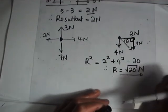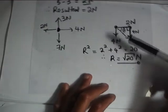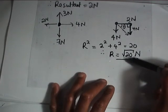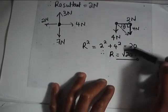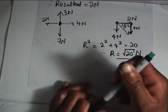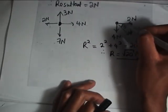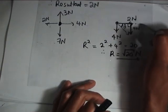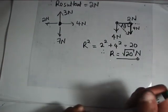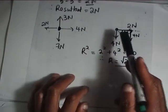We need to calculate this angle theta. If we can calculate this angle theta, we can say: this object is being pulled with a resultant force of root 20 newtons at an angle of theta to the horizontally right direction. This angle theta is with respect to the horizontally right direction.